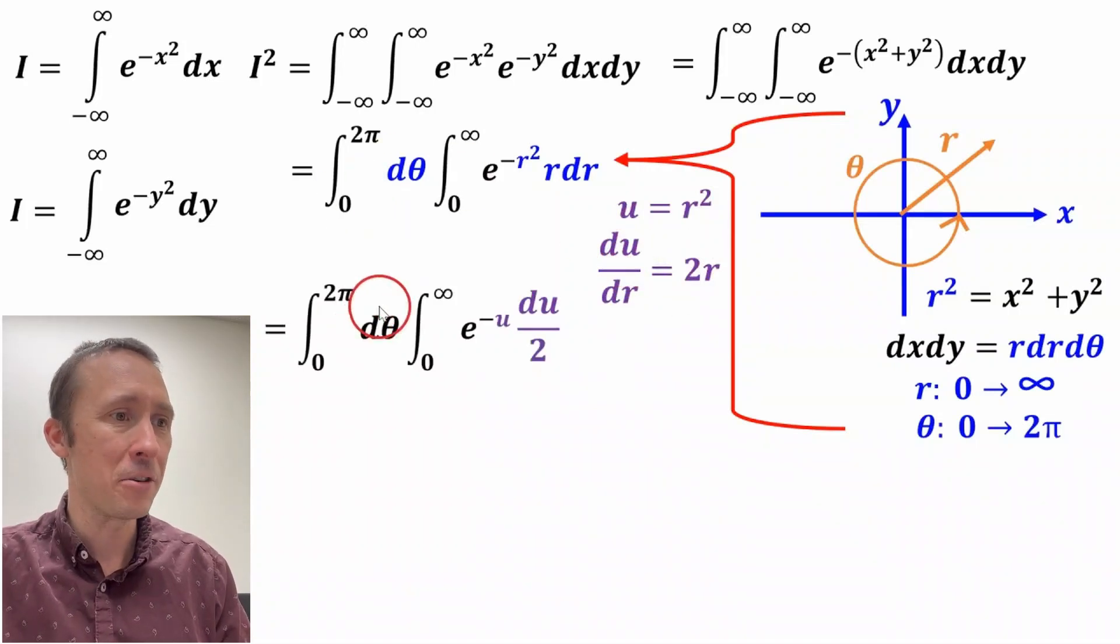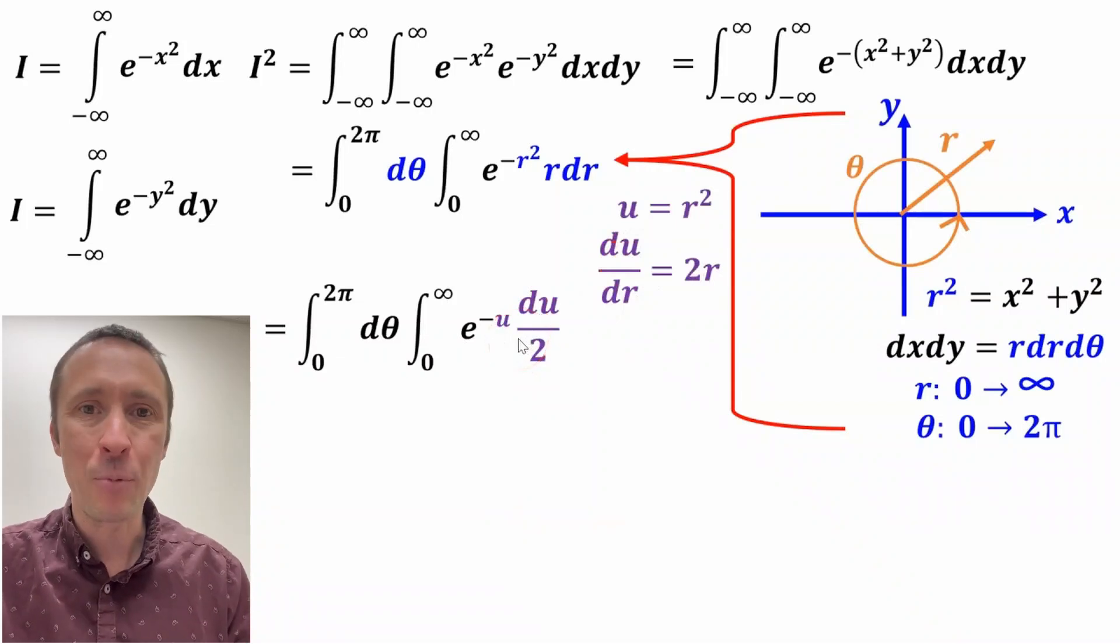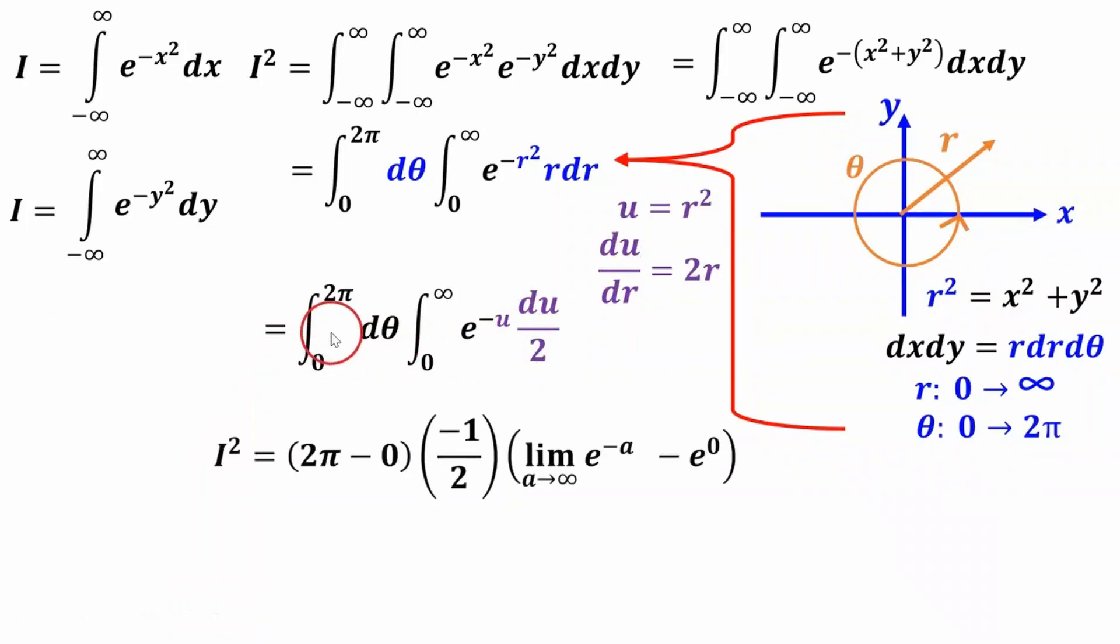So the left-hand integral stays the same. This right integral becomes the integral of e to the negative u, rather than r squared because of our substitution. And if you solve this equation for r dr, we get multiply both sides by dr, divide by two. r dr equals du divided by two. So we substitute that in.